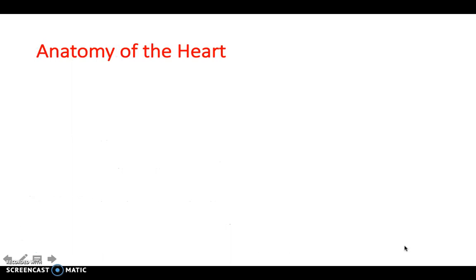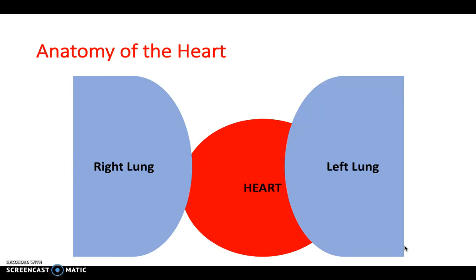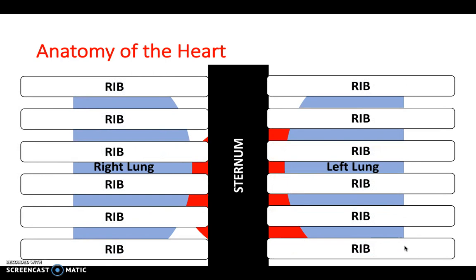For the anatomy of the heart, think of the heart as a circle, with the lungs either side, the sternum in front, and then the ribs on top as protection. This allows you to think in very simple terms of the layering of the thorax.